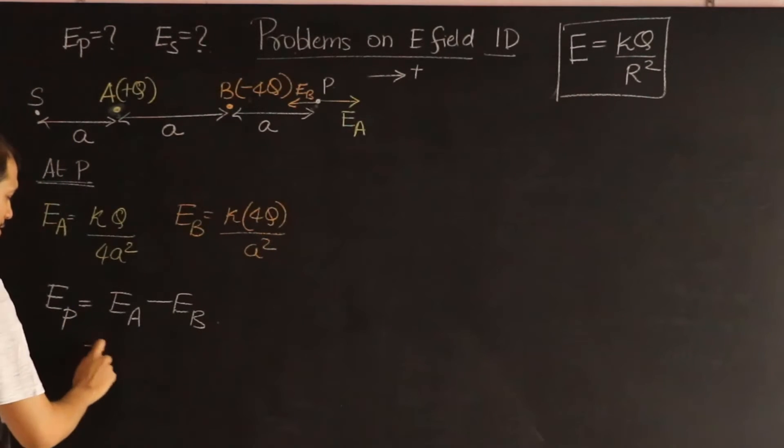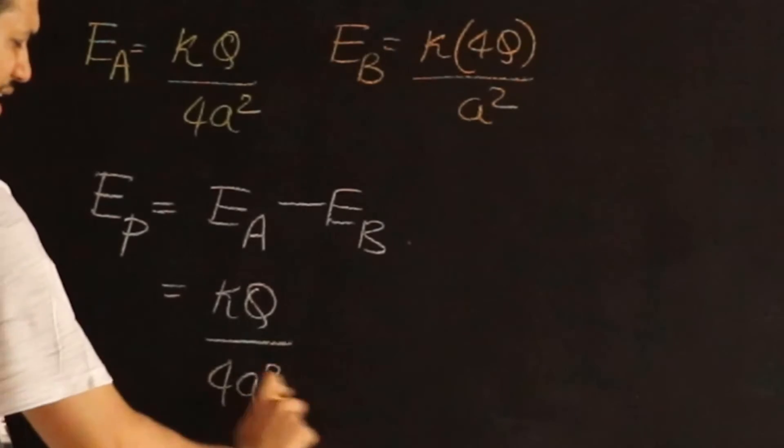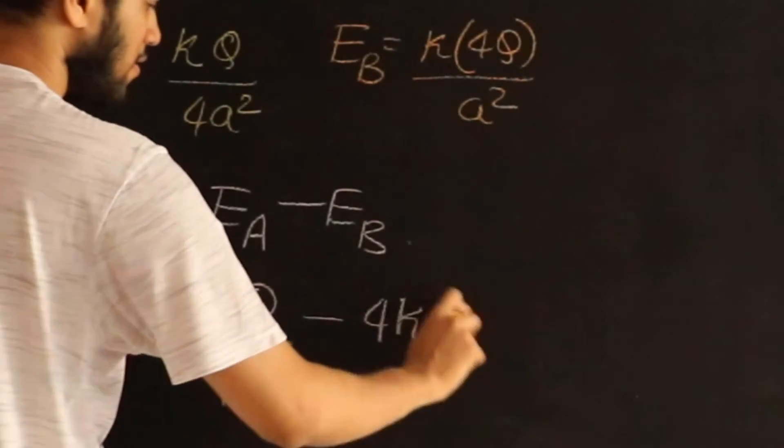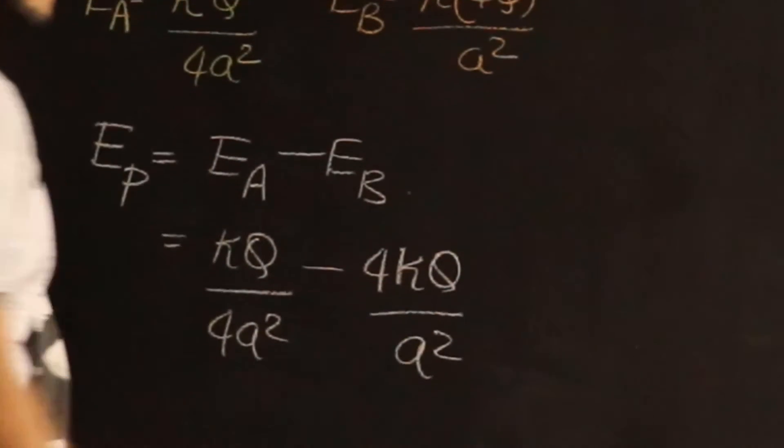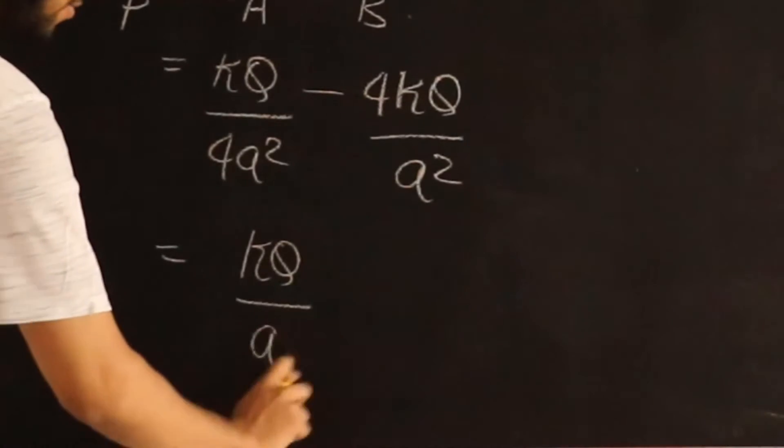So if we substitute now, we get kq by 4a square minus 4kq divided by a square. So if we take kq by a square common,